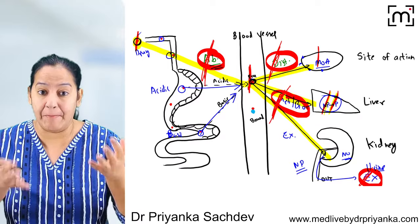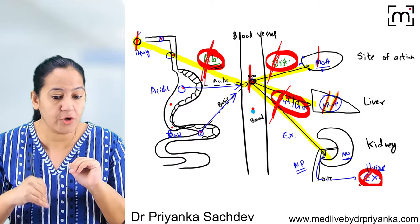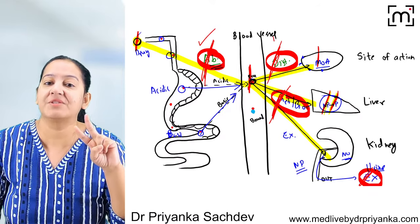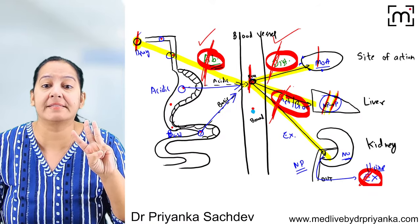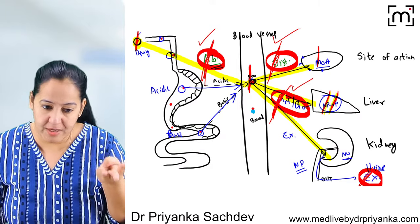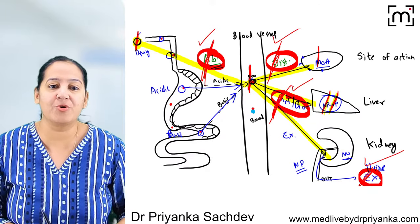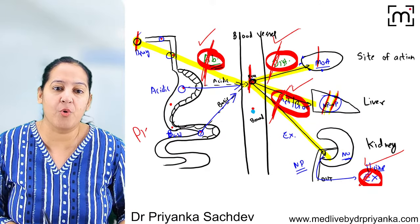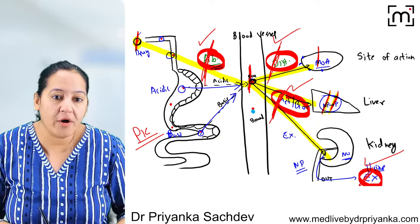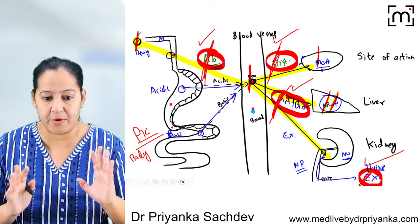The body first absorbs the drug, then distributes it, then metabolizes or biotransforms it, and finally excretes it. This is pharmacokinetics — what the body does to the drug.